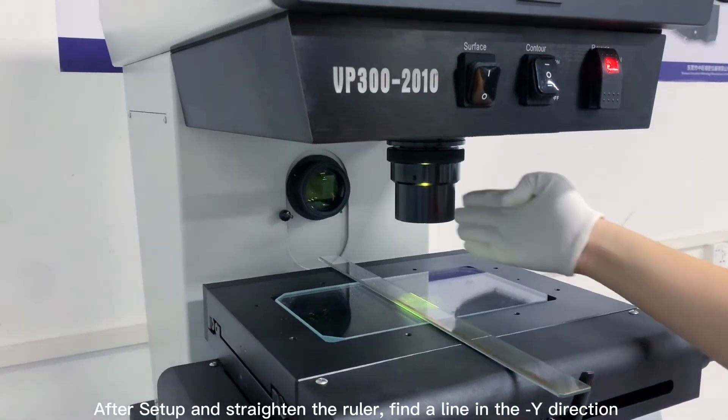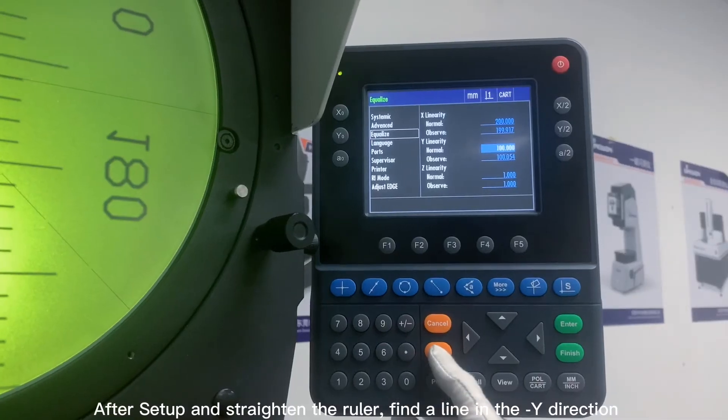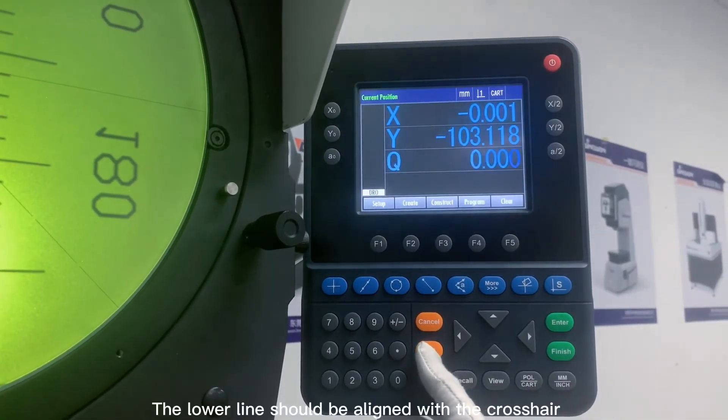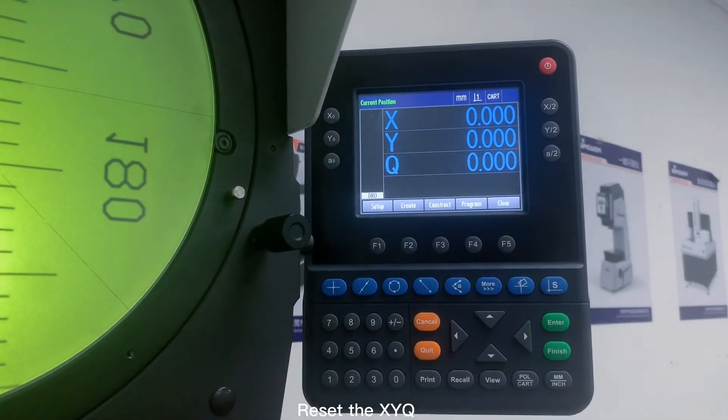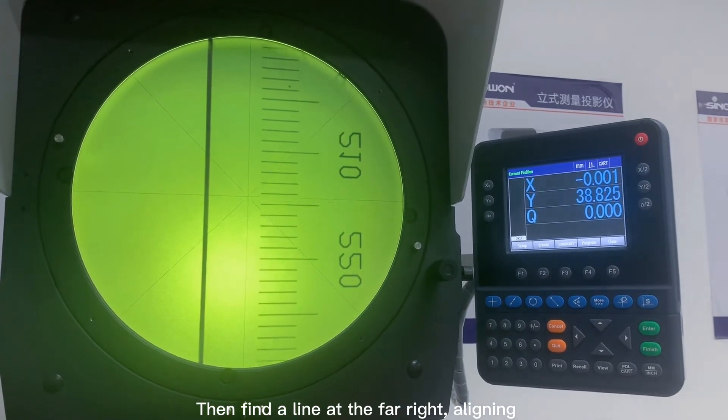After setup and straighten the ruler, find a line in the Y direction. The lower line should be aligned with the cross hair. Reset the Zike. Then find a line at the far right, aligning.